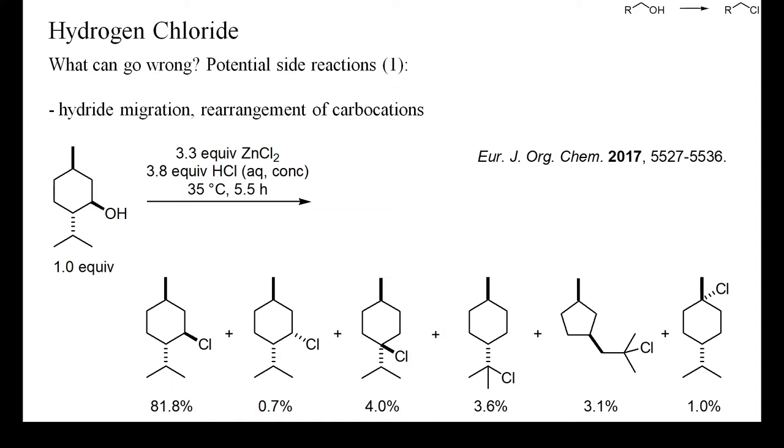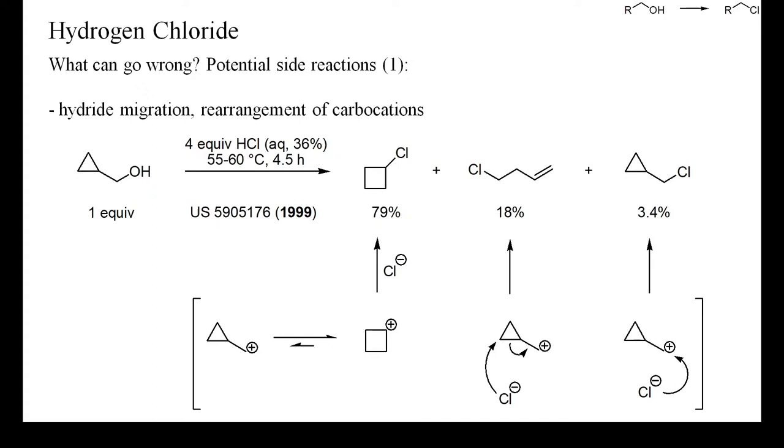Interestingly, the main chloride was formed with retention of configuration. A further example of acid-mediated rearrangement of carbon-carbon bonds is the reaction of cyclopropylmethanol with hydrogen chloride. Here the main product is cyclobutyl chloride and only small amounts of cyclopropylmethyl chloride are formed.